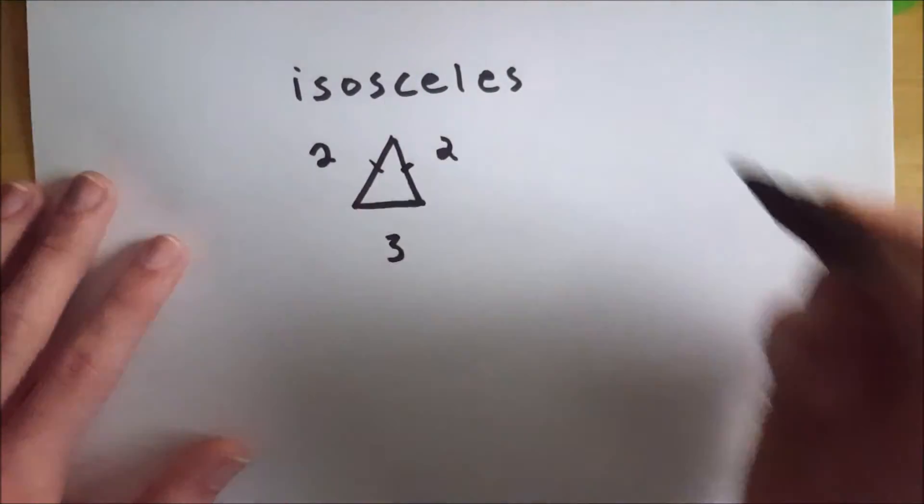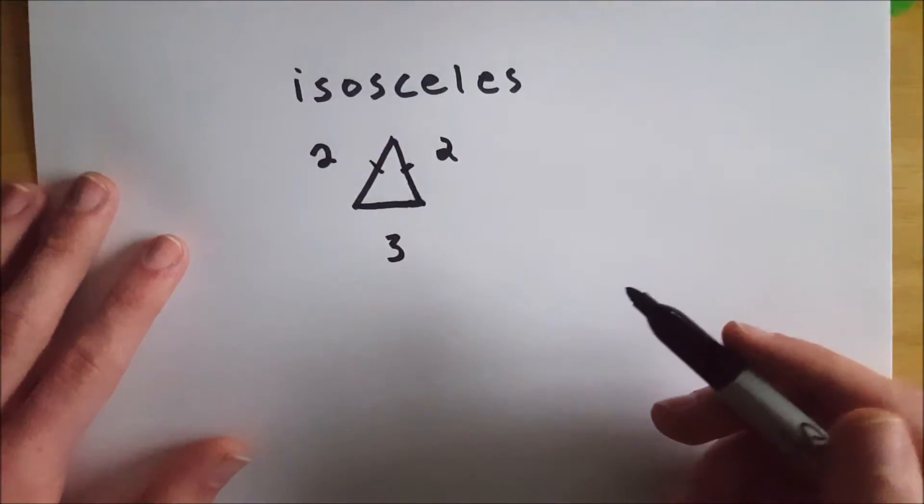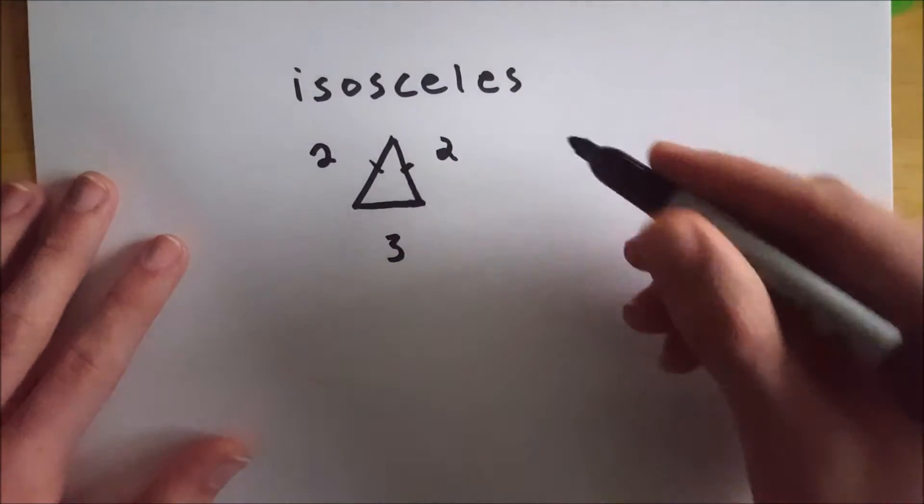So those two sides are congruent. Therefore, it is isosceles because it's a triangle with at least two congruent sides.